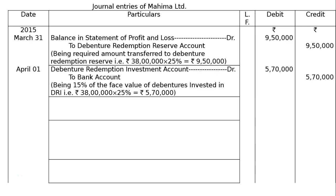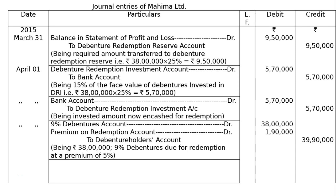It is written that debentures are to be redeemed on 30th June, but the question asks to pass journal entries on 31st March. Hence, on 1st April we can also redeem the debentures, but the second sentence states the debentures are redeemable at a premium of 5% on 30th June 2015. The question asks us to pass journal entries starting from 31st March 2015, so we started from 31st March 2015. 30th June is the due date of redemption.